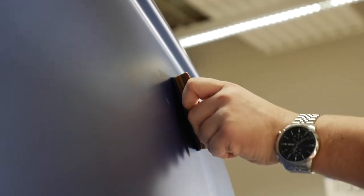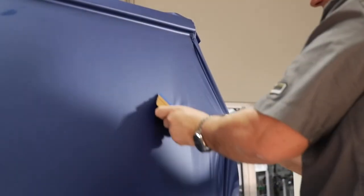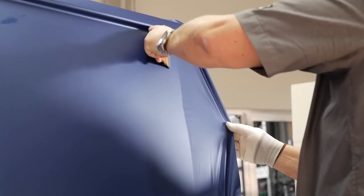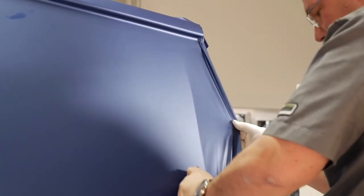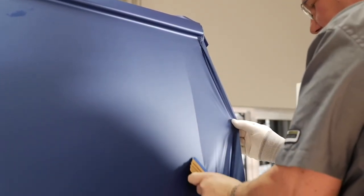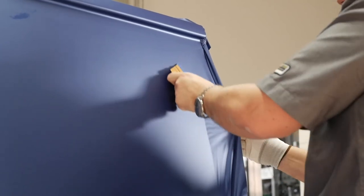Apply with long, overlapping strokes and ensure that the squeegee is in constant contact with the film. The 3M ControlTack technology feature ensures that the film is flexible on the surface and sticks only when pressure is applied. The 3M Comply Air Release feature allows the air to be easily removed without causing bubbles.